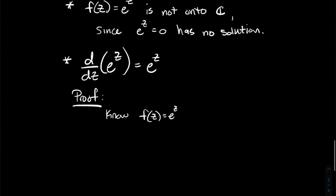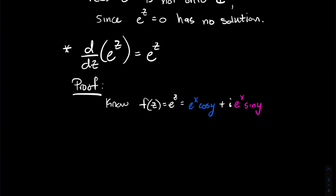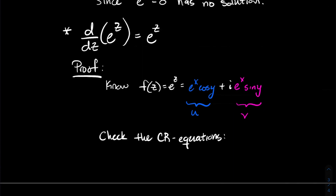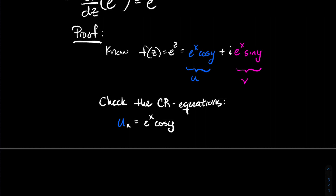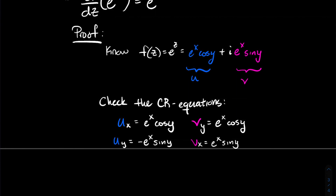Let's prove why this still works. We know e^z = e^x cos y + i · e^x sin y. Call the real part u = e^x cos y (in blue) and the imaginary part v = e^x sin y (in pink). We check the Cauchy-Riemann equations by computing partial derivatives: ∂u/∂x = e^x cos y, ∂u/∂y = −e^x sin y, ∂v/∂y = e^x cos y, and ∂v/∂x = e^x sin y.